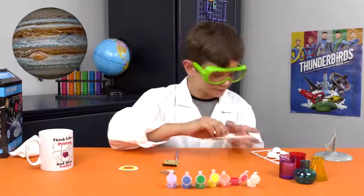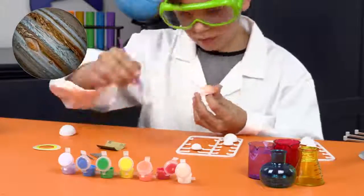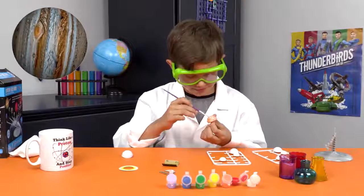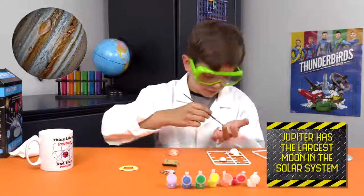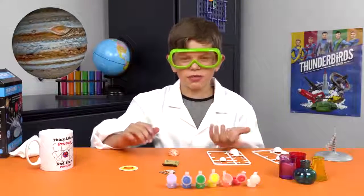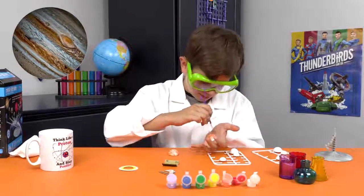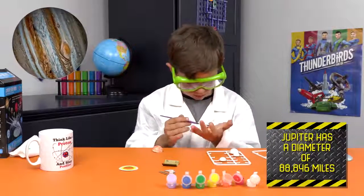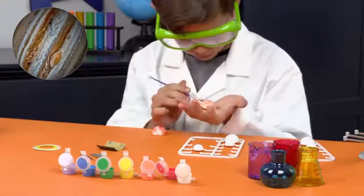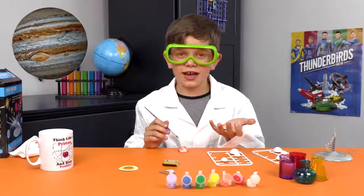Next up we have Jupiter. Jupiter is the largest planet in the solar system. It will take 317 Earths to equal the mass of Jupiter. It's primarily made of gases. Therefore, it's known as the gas giant.